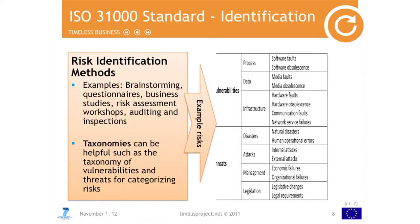Taxonomies can be helpful to identify vulnerabilities and sets for categorizing risk. When we talk about vulnerabilities, we are talking about process, data, and IT infrastructure. For process, we mean what could be the software faults that can happen in an organization, software obsolescence — which is very relevant for Timbers — because if software is going to be obsolescent and our business process still needs it, then we need to look into DP strategies to make sure that after 10 years we still have it up and running. For data, we look into media faults and media obsolescence; for infrastructure, hardware faults, hardware obsolescence, communication faults, and network service failures.